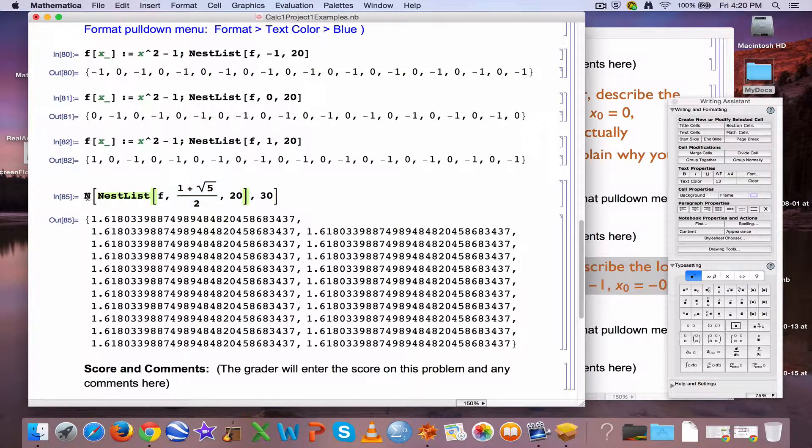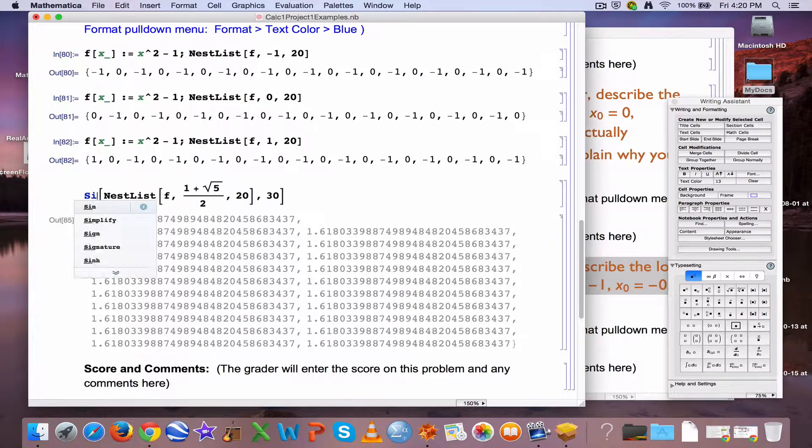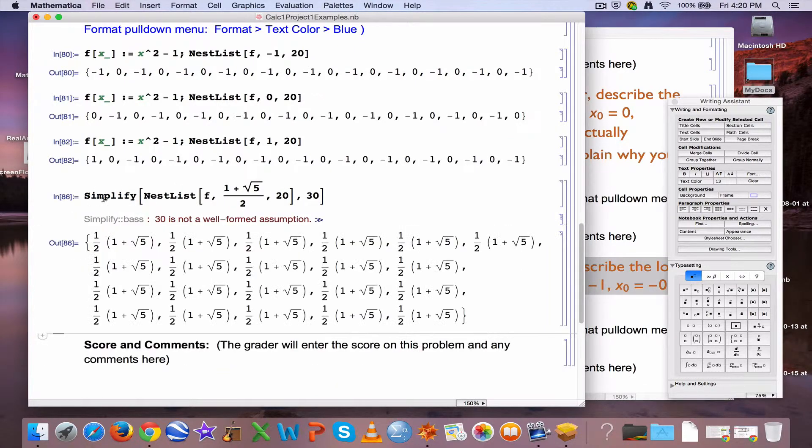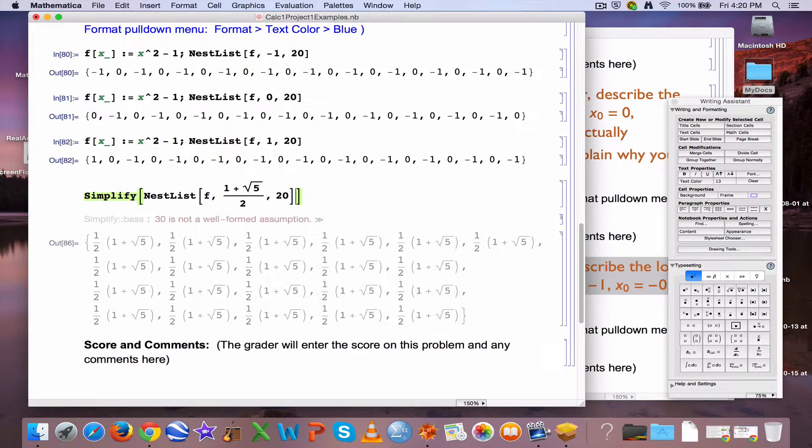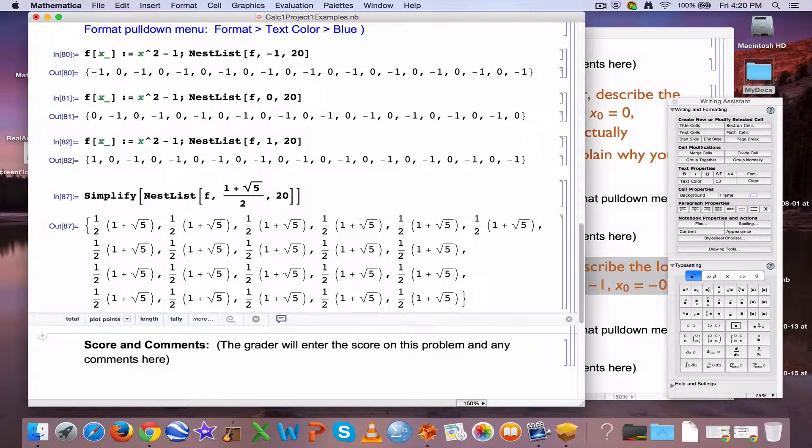Is there another way to do that? Yeah, you could simplify instead of approximate. Let's see, nope, okay, got to get rid of that 30 there. There we go. Simplify shows, confirms that they are all the same number.